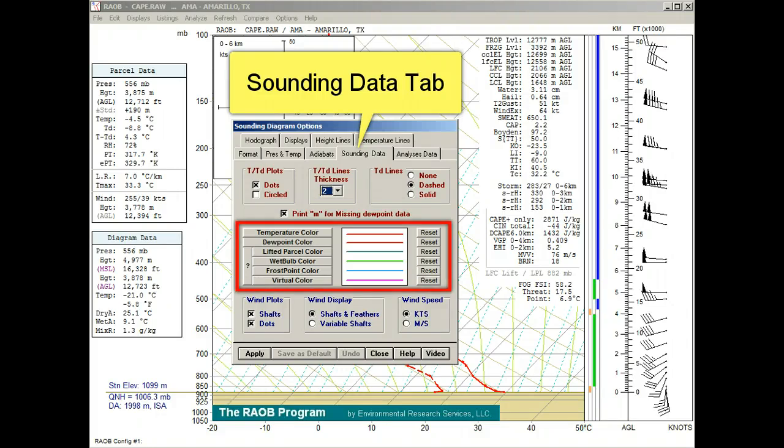This section allows the user to specify the color for the temperature, dew point, lifted parcel, wet bulb, frost point, and virtual temperature profiles.